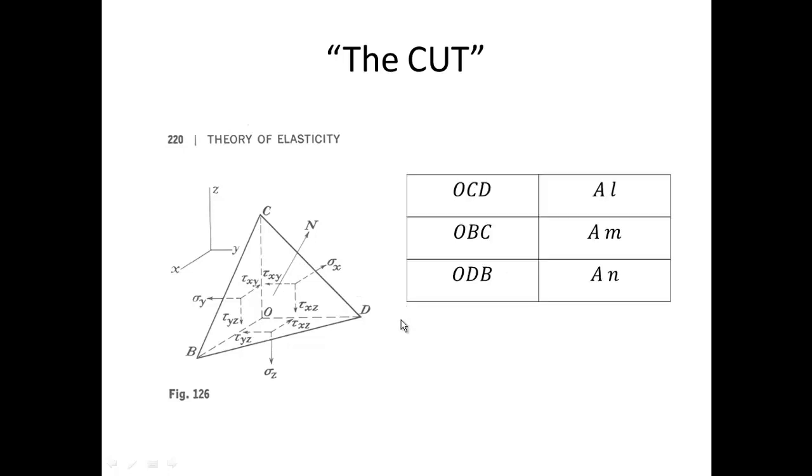Then, by projection, the areas of the other three faces of the tetrahedron can be written. Al is the area of the OCD triangle face and Am is the area of the triangle OBC and An is the area of the triangle ODB.